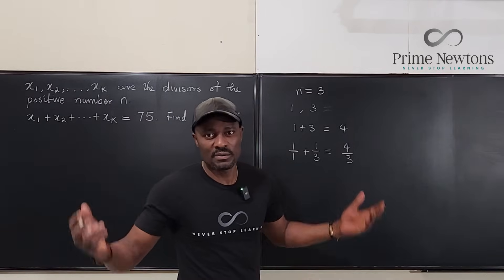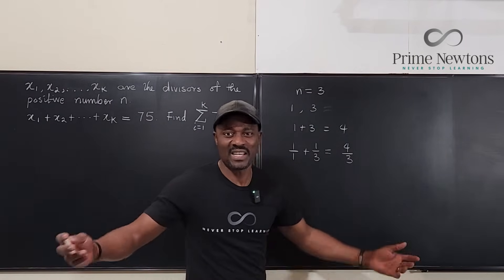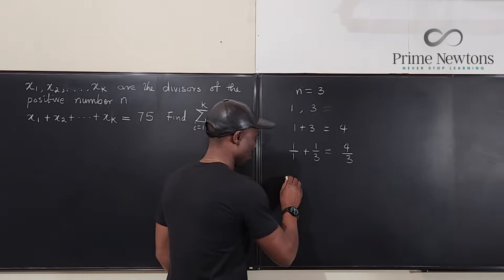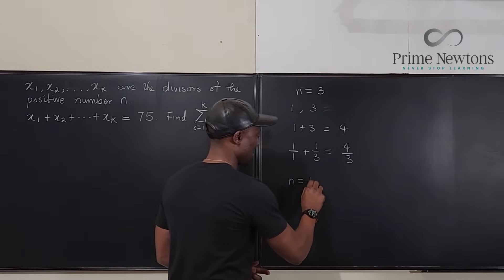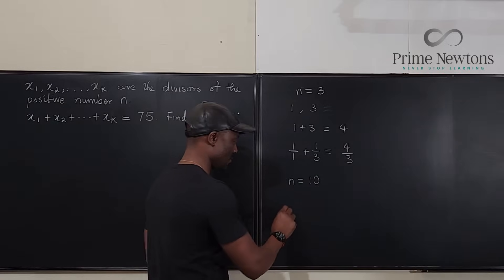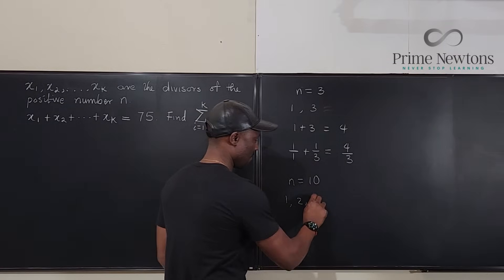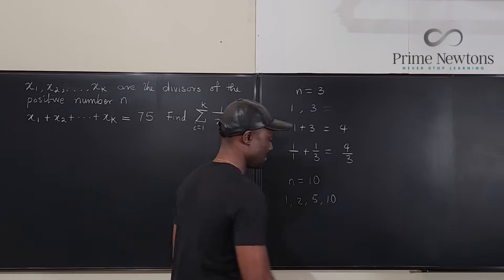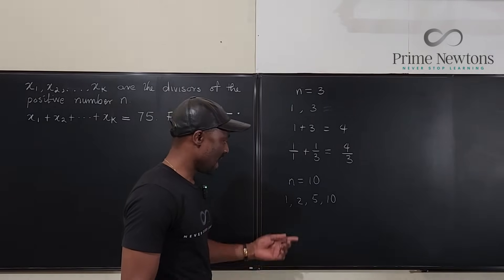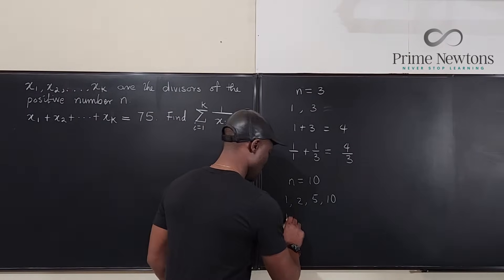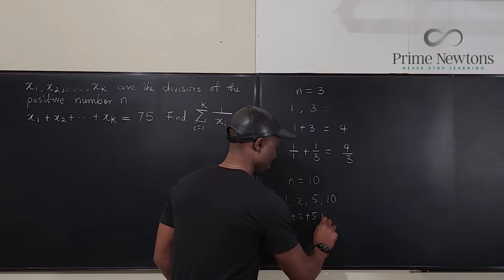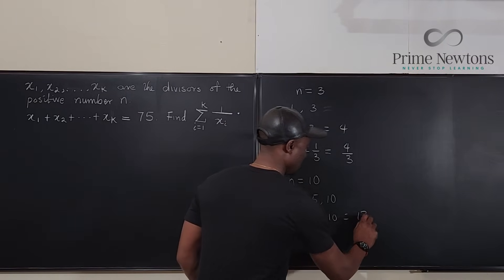So, let's say that we pick the number 12, for example, or 10. Let's do 10. If we have 10, the divisors of 10, let's say n equals 10, the divisors of 10 will be 1, 2, 5, and 10. Now, the sum of these numbers will be equal to 1 plus 2 plus 5 plus 10 equals 18.